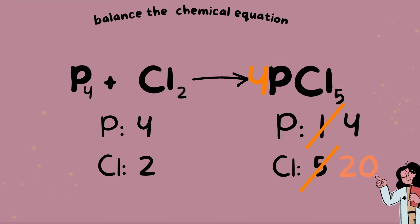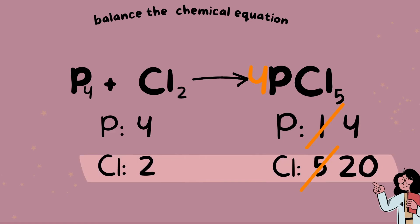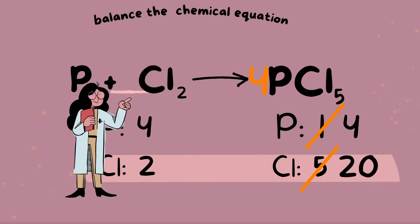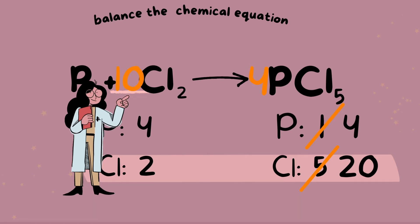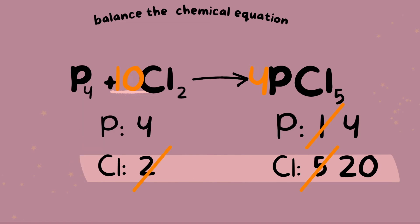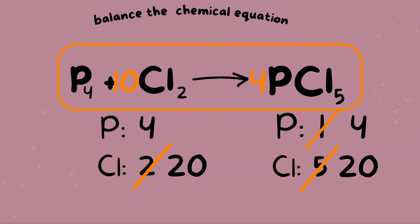Now that our phosphorus is all balanced out, let's look at chlorine. We now have two on the reactant side and 20 on the product side. What can we add in front of the chlorine to make it 20? Well we can add a 10 and then 10 times the 2 will give us a total of 20 chlorine atoms or moles. Awesome, so we're all balanced out here. Let's go ahead and move on to one more practice problem.